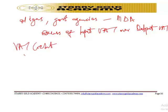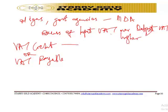The net VAT after these adjustments may either result in a VAT credit or VAT payable. A VAT credit arises when your input VAT is higher than your output VAT. When your output VAT is higher than the input VAT, then you have VAT payable.